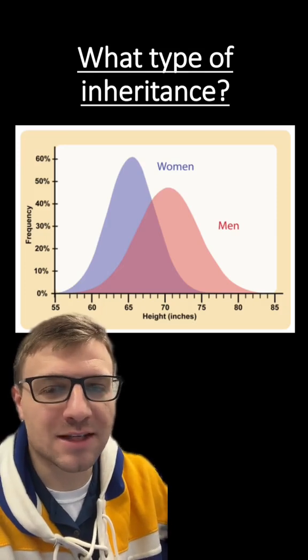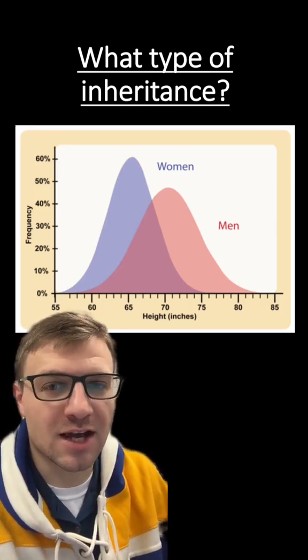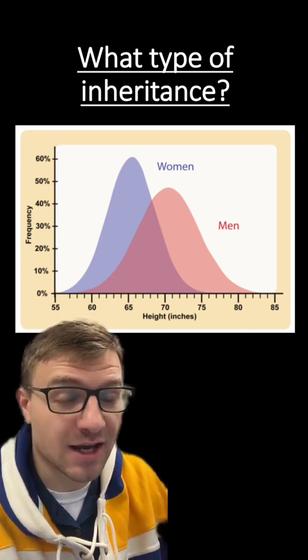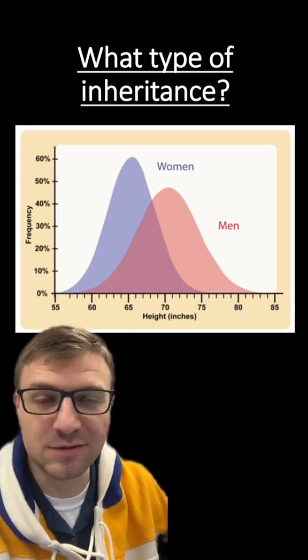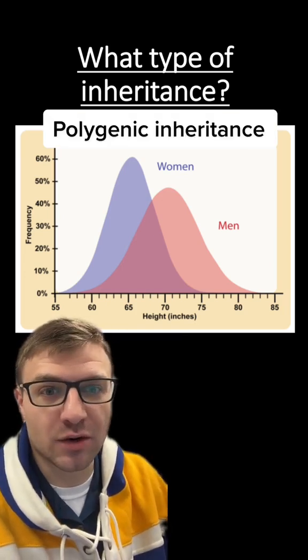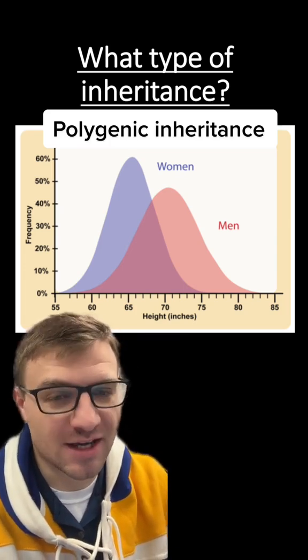And here's our last type of inheritance. This is when many genes are going to control the phenotype of one trait. This specific illustration is showing us the wide variety of human heights in men and women. And this is because there isn't just one gene for human height. There are many genes that are going to influence how tall someone is. And this is an example of polygenic inheritance.